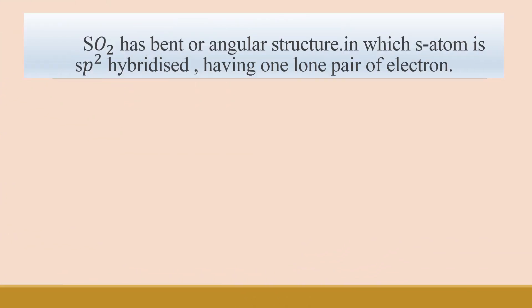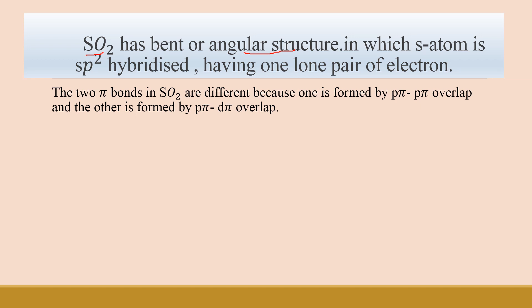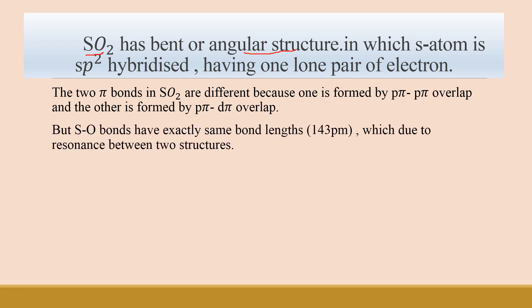Now we will discuss the structure of SO2, the dioxide of sulfur. SO2 has a bent or angular structure in which the sulfur atom is sp2 hybridized, having one lone pair of electrons. The two pi bonds in SO2 are different: one is formed by p pi–p pi overlap and the other is formed by p pi–d pi overlap.